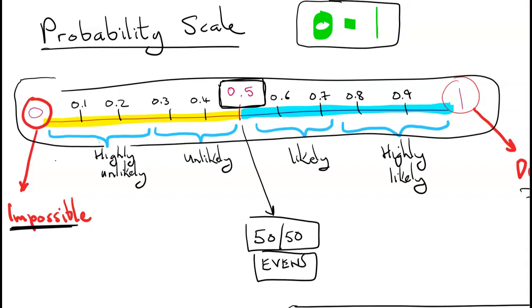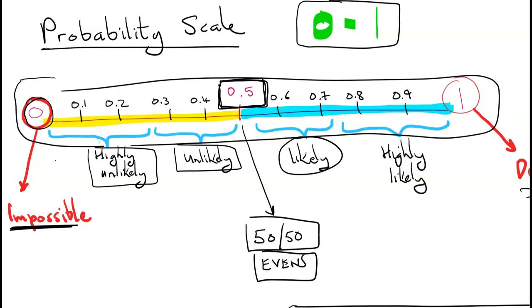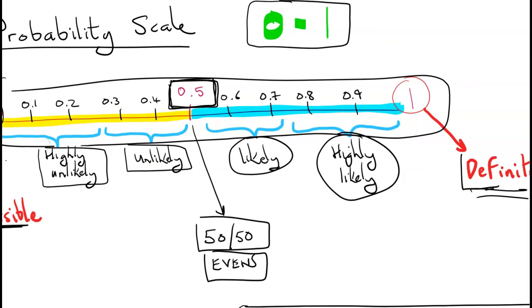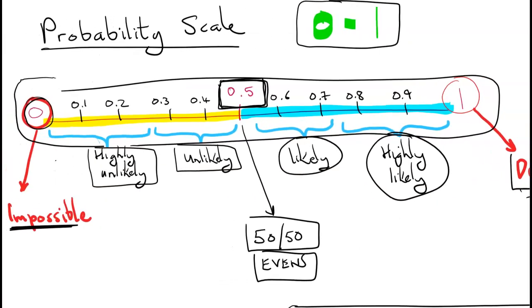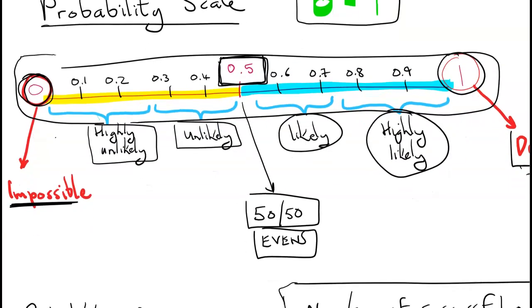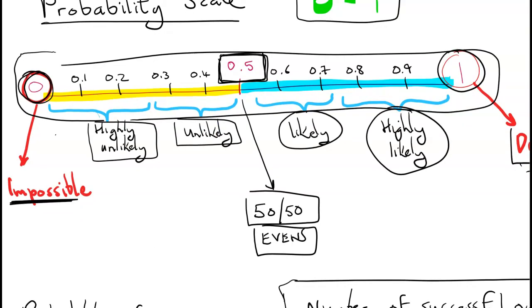Between 0 and 0.5 is a varying degree of unlikeliness. The closer you get to 0, the more unlikely something is of happening, and the closer you get to 0.5 it's beginning to become likely. It definitely becomes likely once you go above 0.5 up to highly unlikely, and then 1 is definite. There are very few things in life that are 1 and very few things that are 0 — most things have some level of probability.